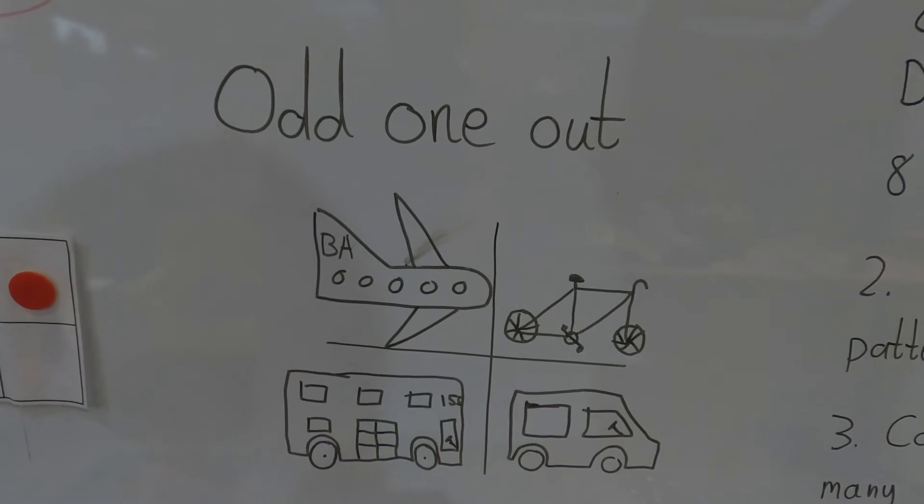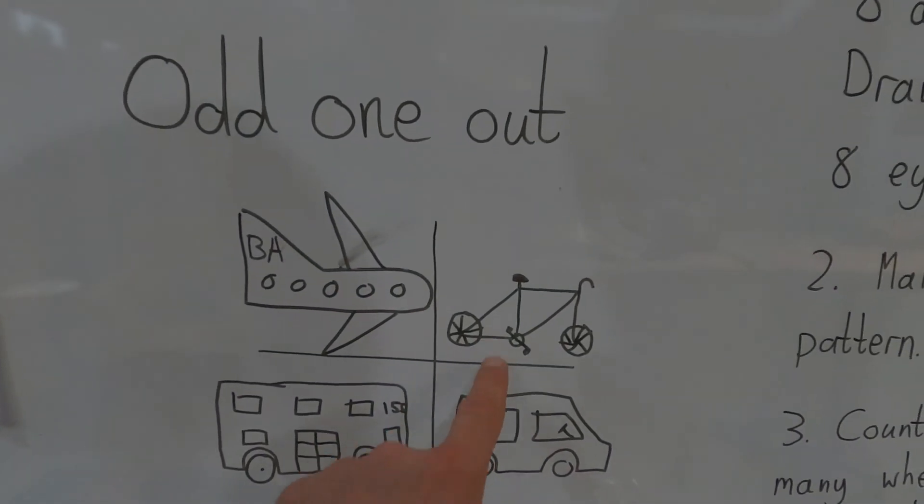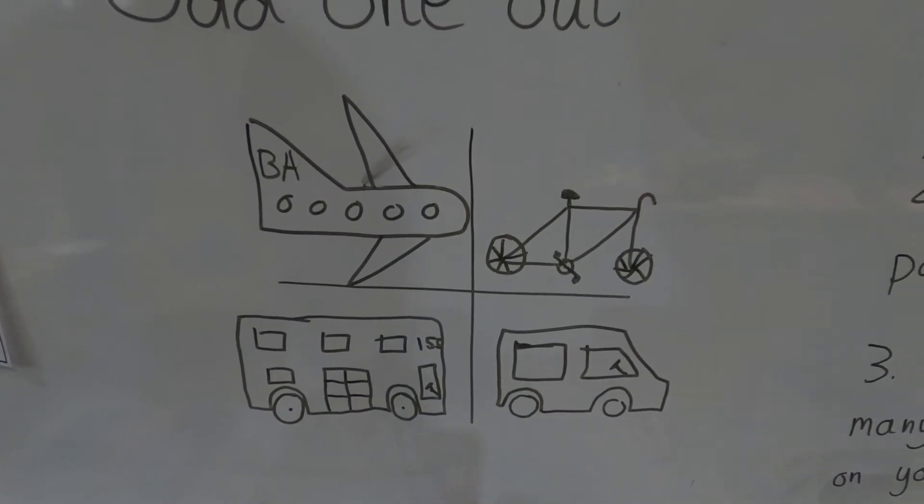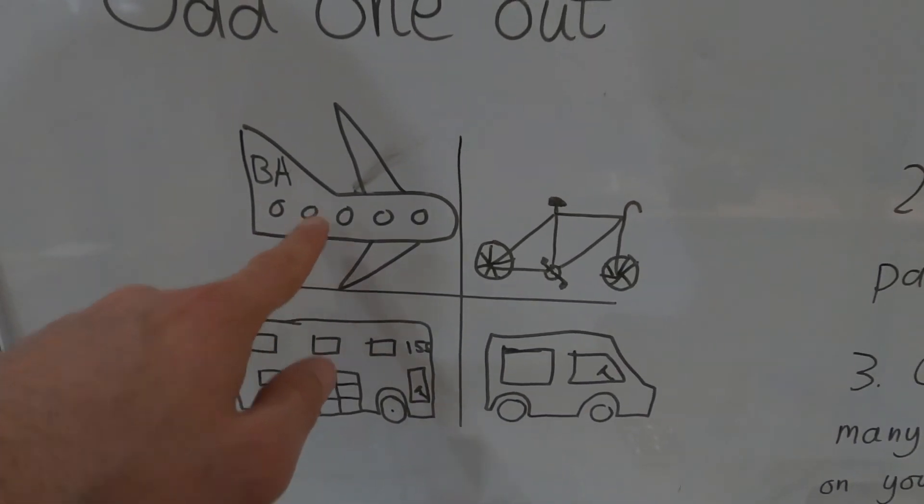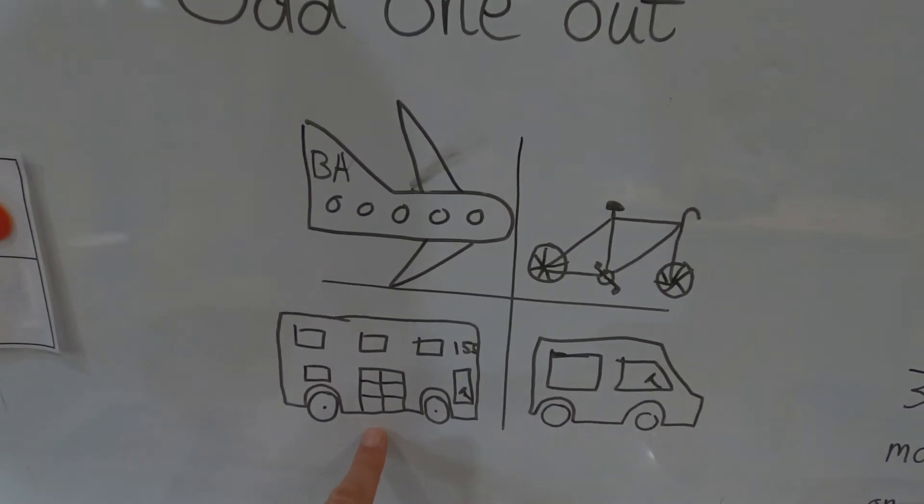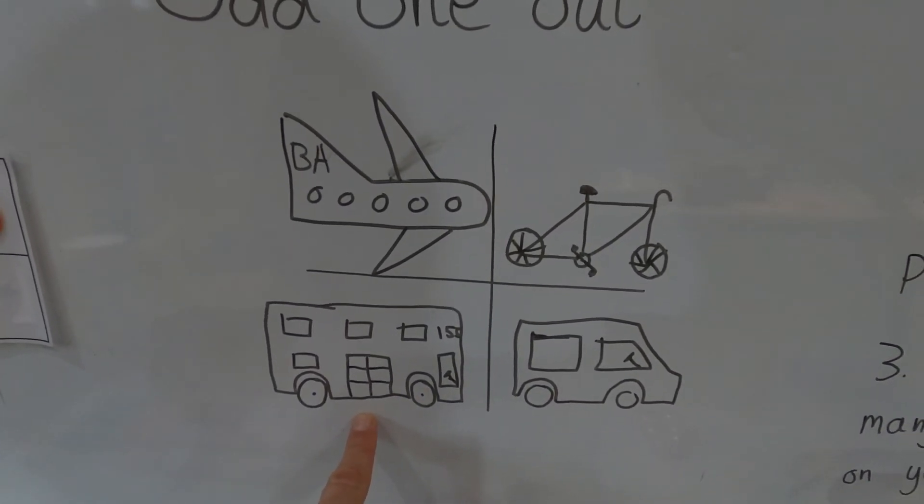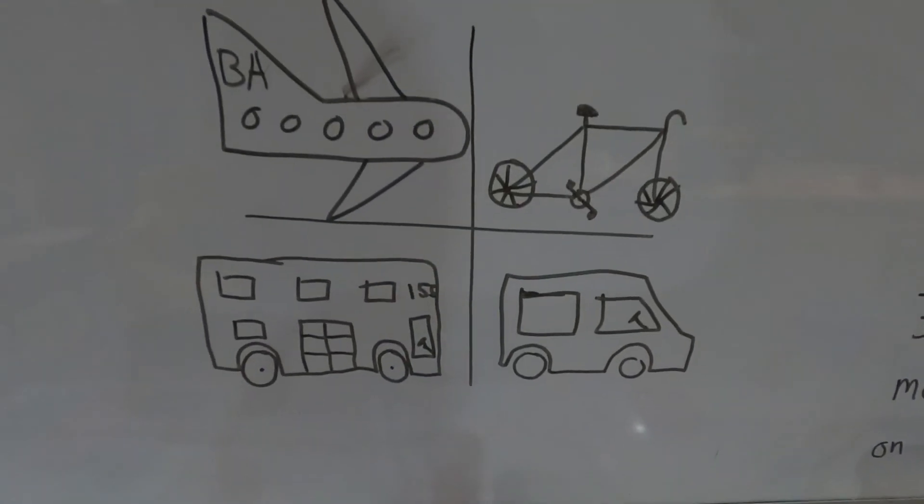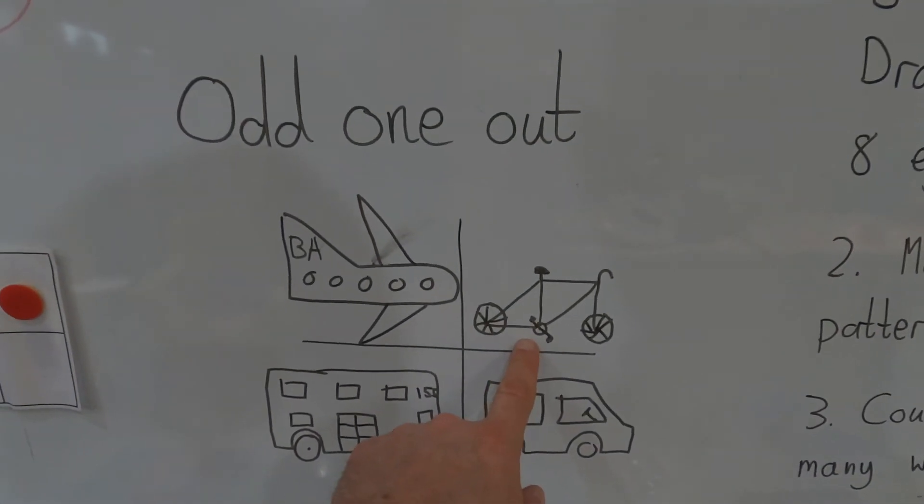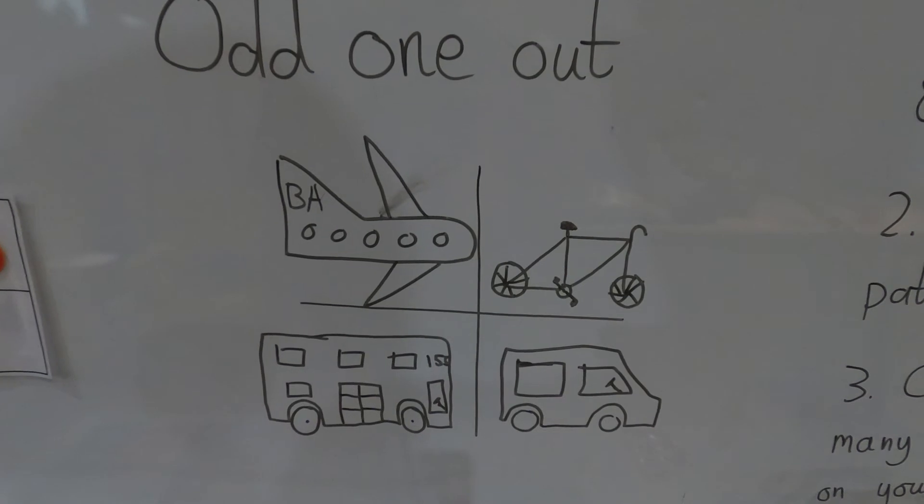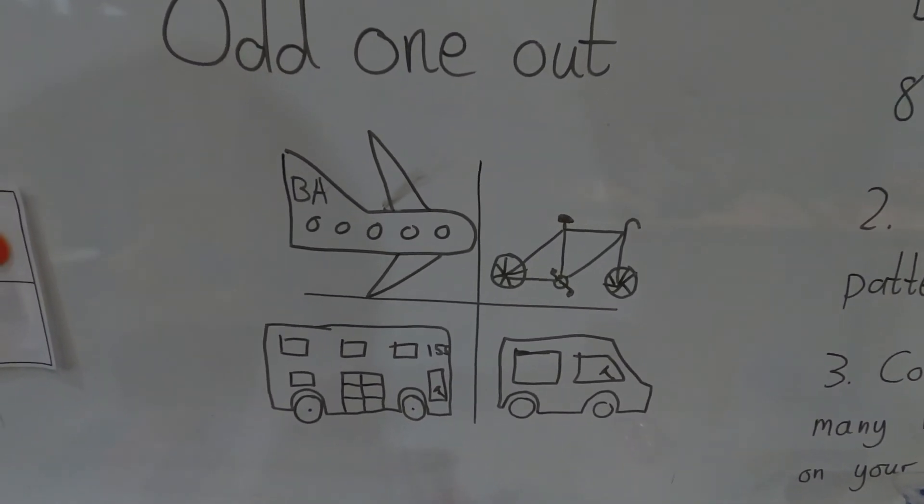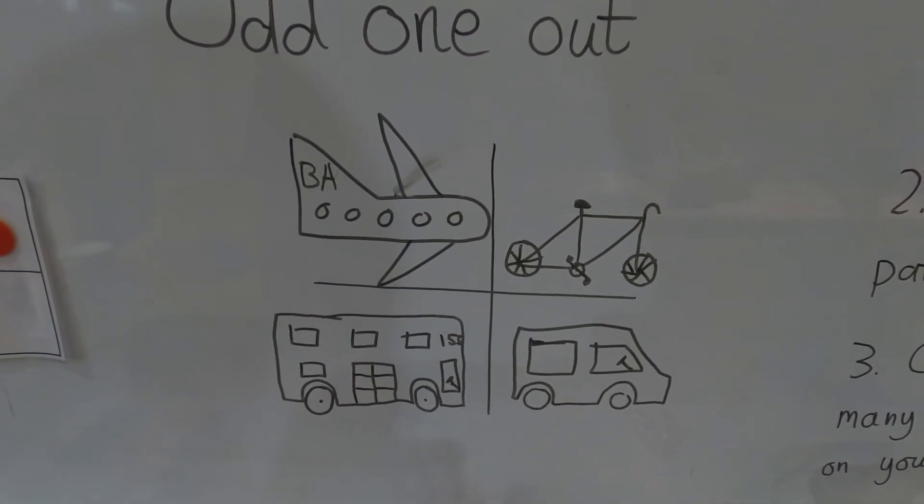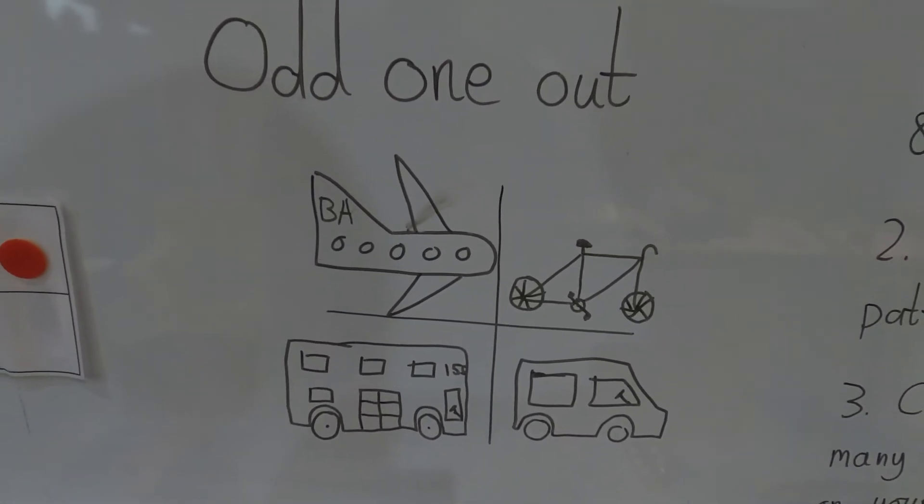I've got one more. Let's go with the bicycle because it's the only one you have to pedal. If you go on an aeroplane, the engines push you along. If you go on a bus, do you have to push the bus? Nope, the bus has an engine. Do you have to push your car? No. But do you have to use your legs to make the bike go forward? Yeah, you do. You have to push it or scoot it or pedal it.